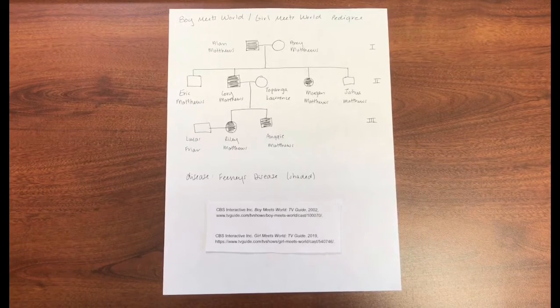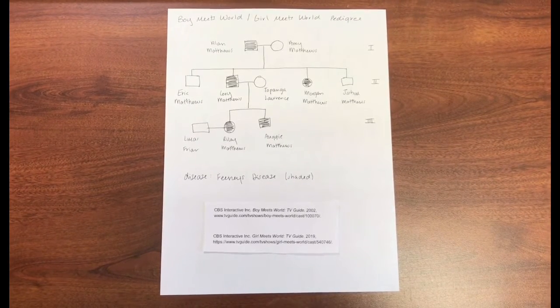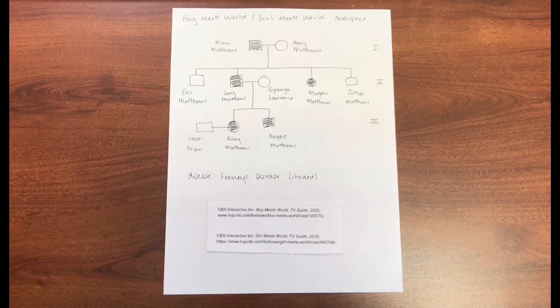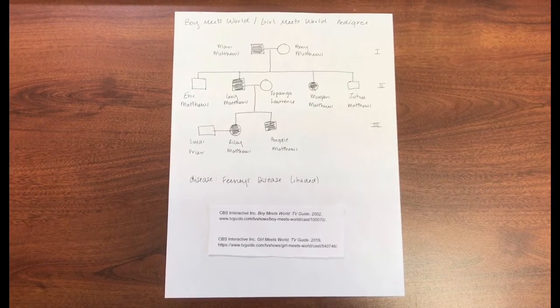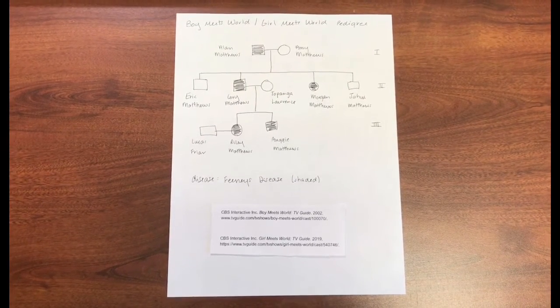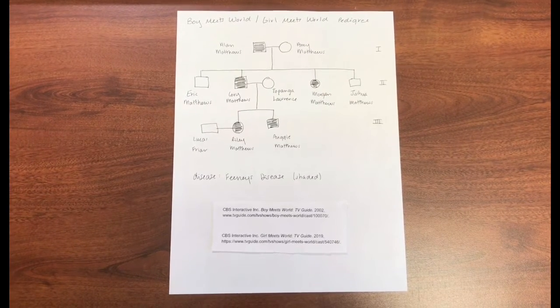They have four children: Eric, Corey, Morgan, and Joshua. Corey goes on to marry Topanga, and they have two children, Riley and Augie. Riley is in a relationship with Lucas.